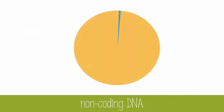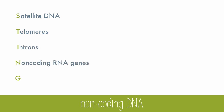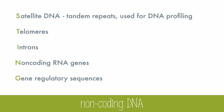Only 1% of DNA actually codes for protein. The rest is called non-coding DNA, which used to be called junk DNA in the past. But just because DNA doesn't code for protein doesn't mean it has no purpose. Here are 5 different uses for non-coding DNA, with the acrostic STING to help you remember them. STING stands for satellite DNA, telomeres, introns, non-coding RNA genes, and gene regulatory sequences. Satellite DNA includes tandem repeats, which are the portions used for DNA profiling.